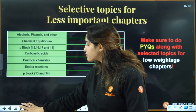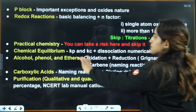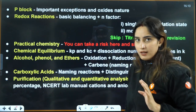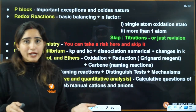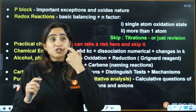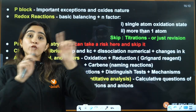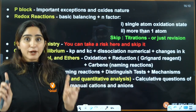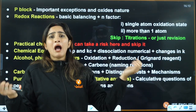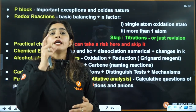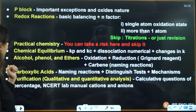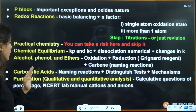For chemical equilibrium: focus on the Kp–Kc relation, dissociation numericals, how to calculate Kp and Kc when degree of dissociation (alpha) is given, and factors affecting equilibrium. Also understand how when you add two reactions you multiply or divide and how the equilibrium constant changes accordingly.